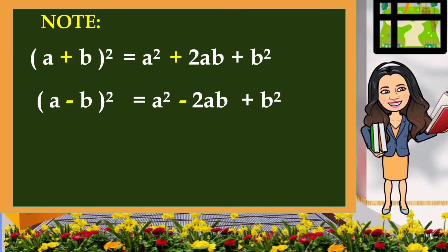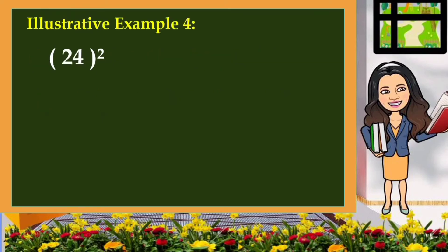Take note that when we square a binomial, pay attention to the sign that separates the two terms. When the sign is plus, the middle term of the result is also plus. And when the sign separating the two terms is a minus sign, the middle term is also negative or minus. Take note that the result when you square a binomial is a perfect square trinomial.